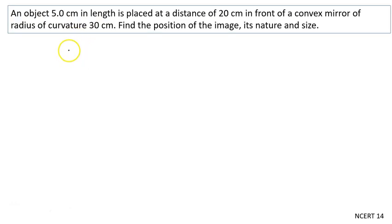An object 5 centimeters in length (height of the object is 5 cm) is placed at a distance of 20 centimeters. u is given to us as -20 cm, and u in all cases is negative, so it is -20 centimeters.